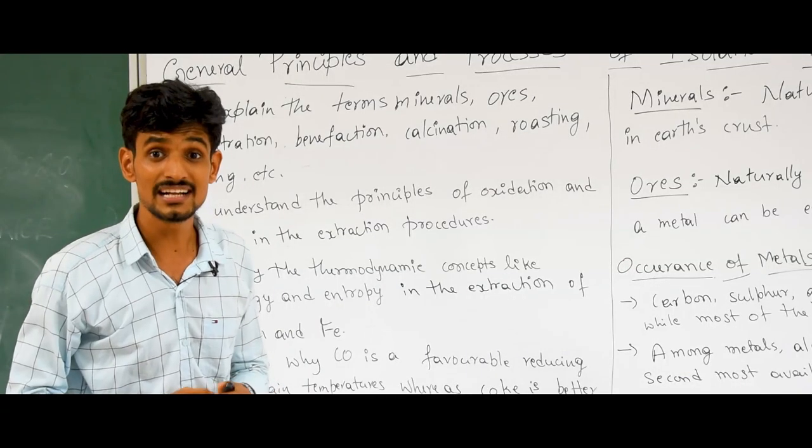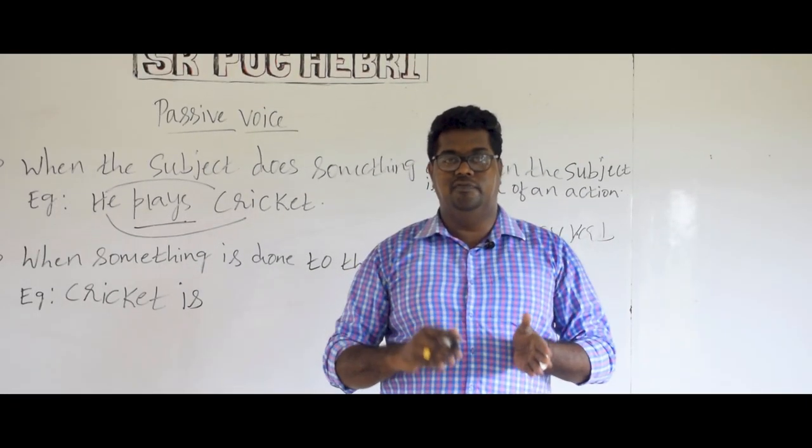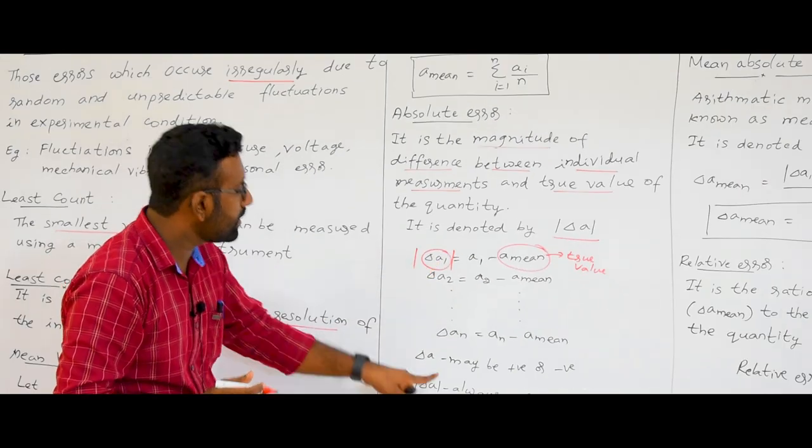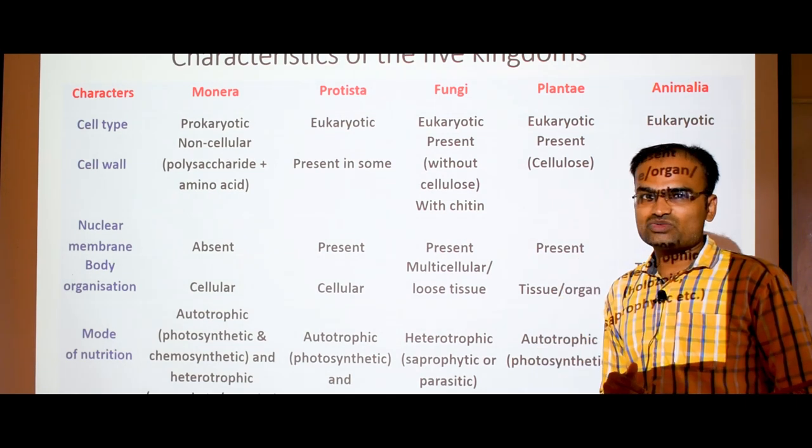T is equal to theta minus T delta s. The form of G will become half theta. It can be positive or negative. High kingdom classification which was given by the RH.